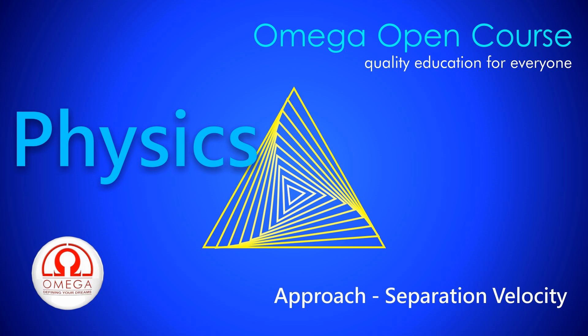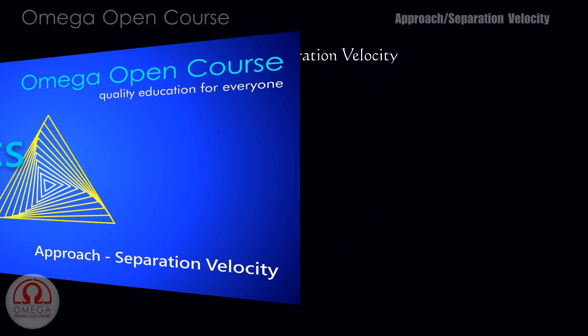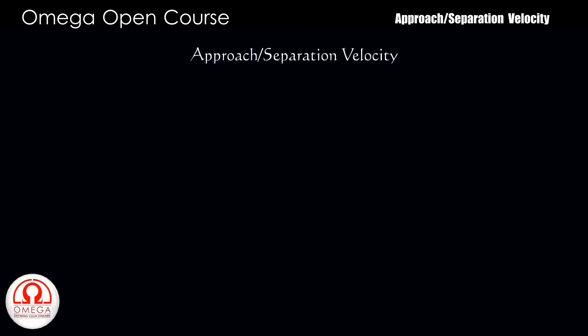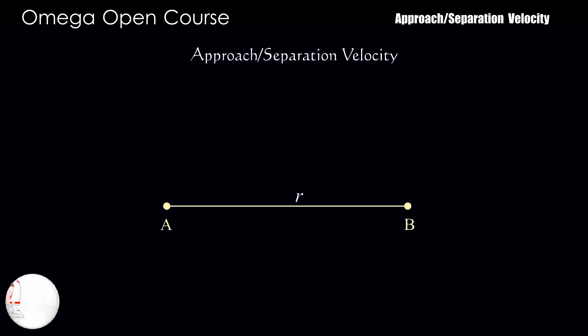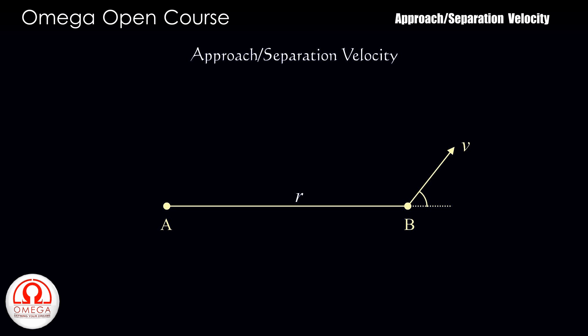We will also explore the tangential velocity and its relation with angular velocity. Suppose there are two particles A and B with an initial separation of R between them. A is at rest while B is moving with velocity V making an angle theta with the line joining the two particles.